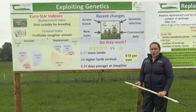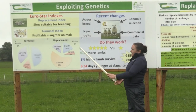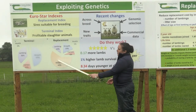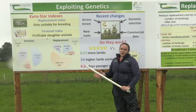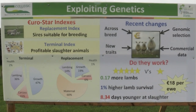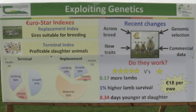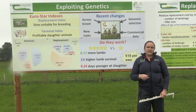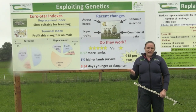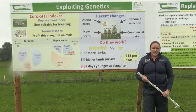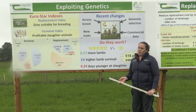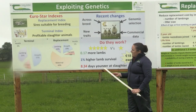What is actually included in the indexes, and what do farmers or pedigree breeders record to feed into them? Starting with the replacement index, you can see that a huge proportion — about 60% — of a Eurostar value given to a ram is made up of maternal-type traits: litter size of the ewe, the milk yield of the ewe, and her ability to give birth to lambs. That's one of the most important parts of the replacement index.